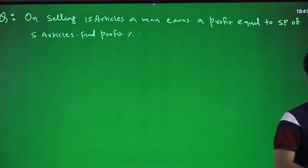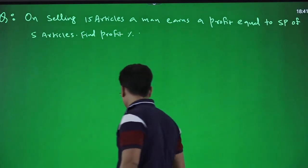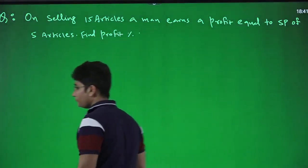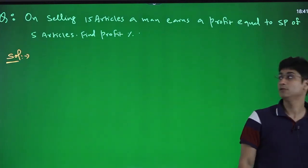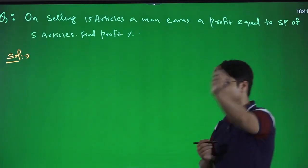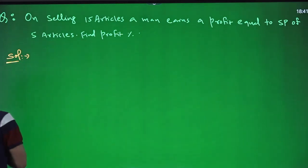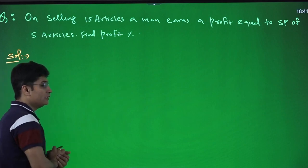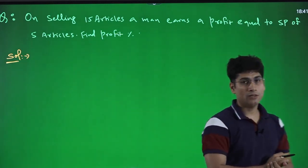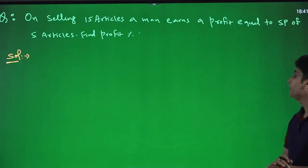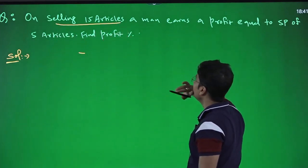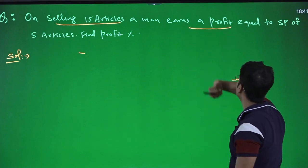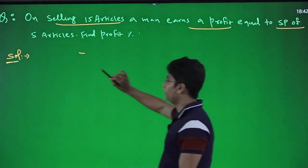To solve this type of question, assume selling price of 1 article = ₹1. Why selling price? Because the profit is given equal to selling price of 5 articles. If selling price of 1 article = ₹1, selling price of 15 articles = ₹15.